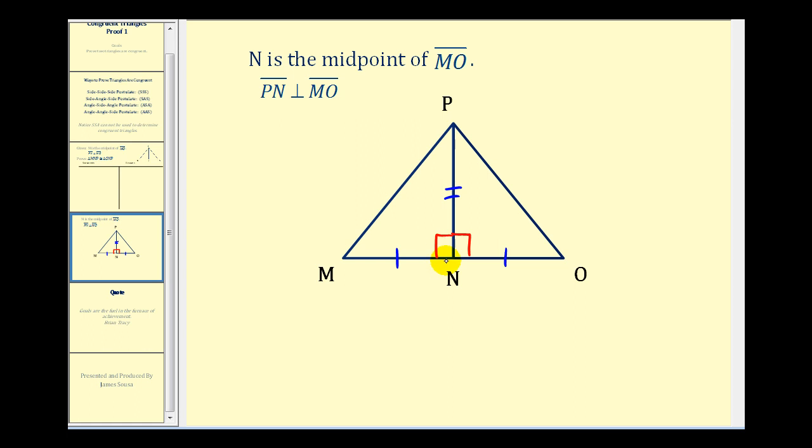So notice that we could use side-angle-side to prove these two triangles are congruent. So let's go ahead and organize these thoughts in a two column proof.